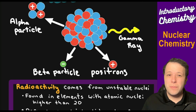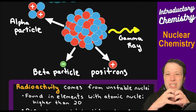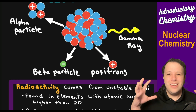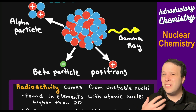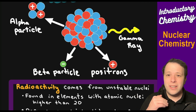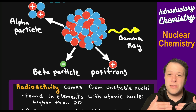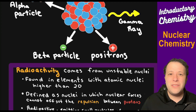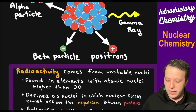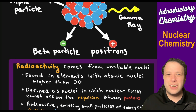The basic idea of radioactivity comes from unstable nuclei when they're ready to break apart. It's like taking a Lego sculpture and smashing it against the wall — it could break apart in all kinds of different ways. These are mainly found in atomic nuclei that are generally higher than 20, because the more protons we have in the nucleus, like the one drawn up top here, it has a lot of protons, a lot of neutrons.